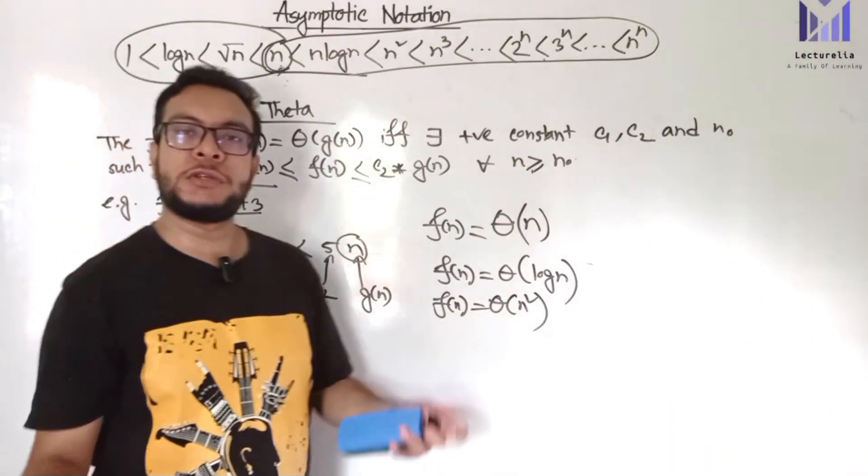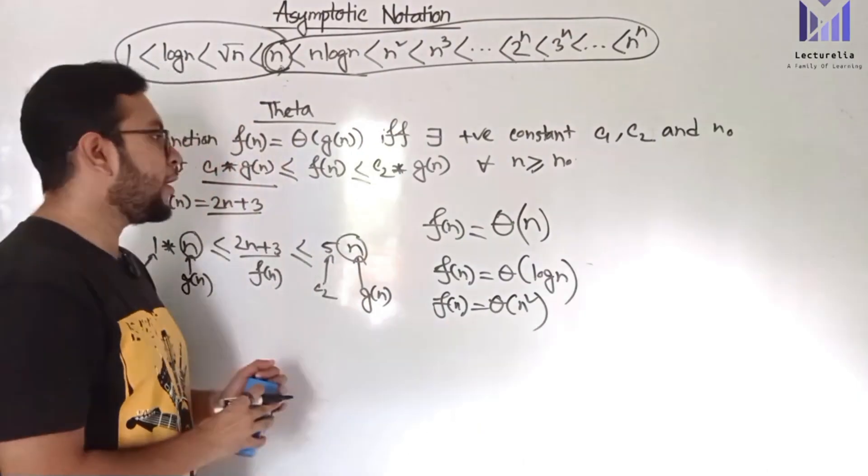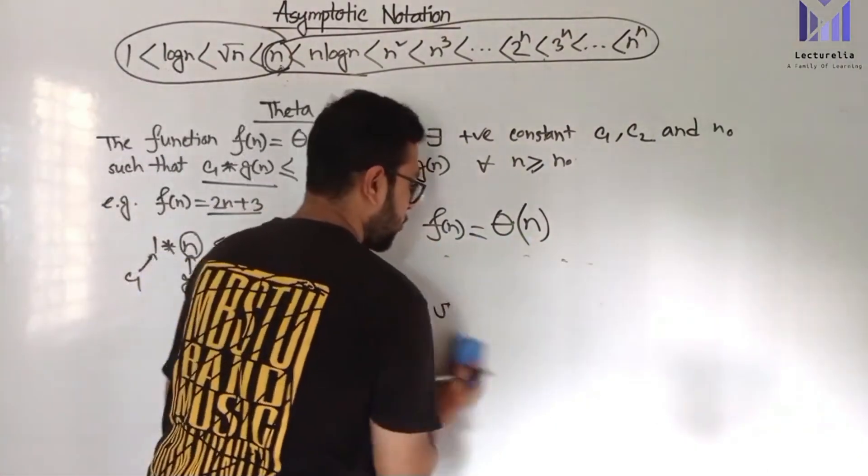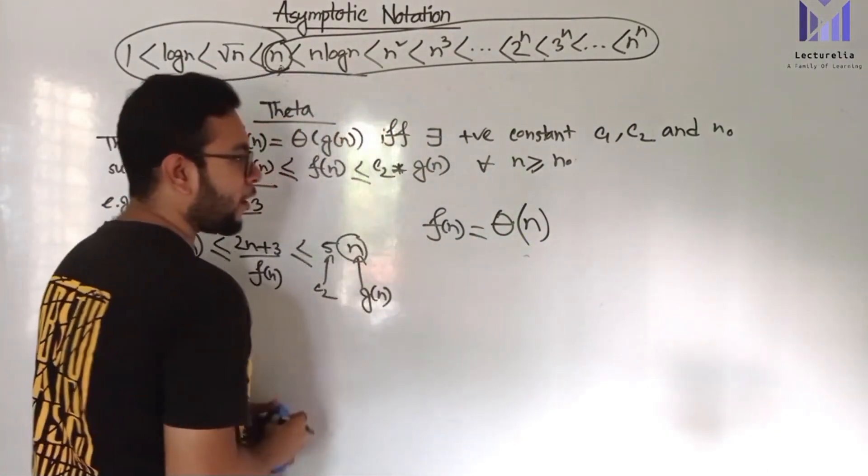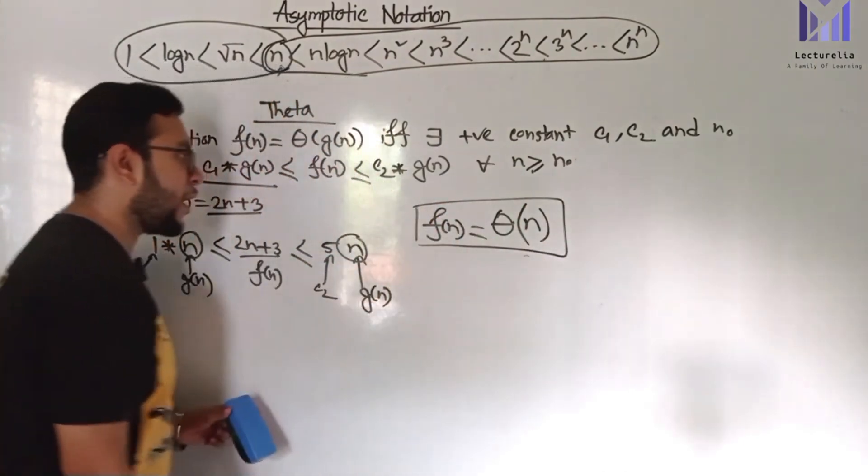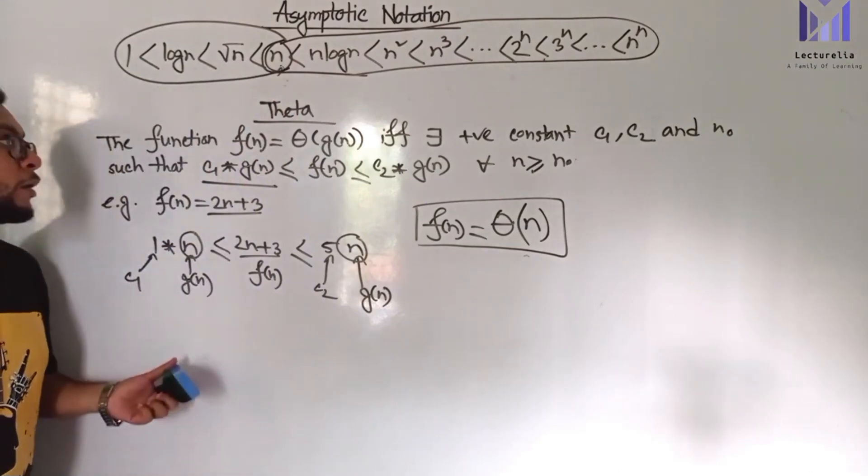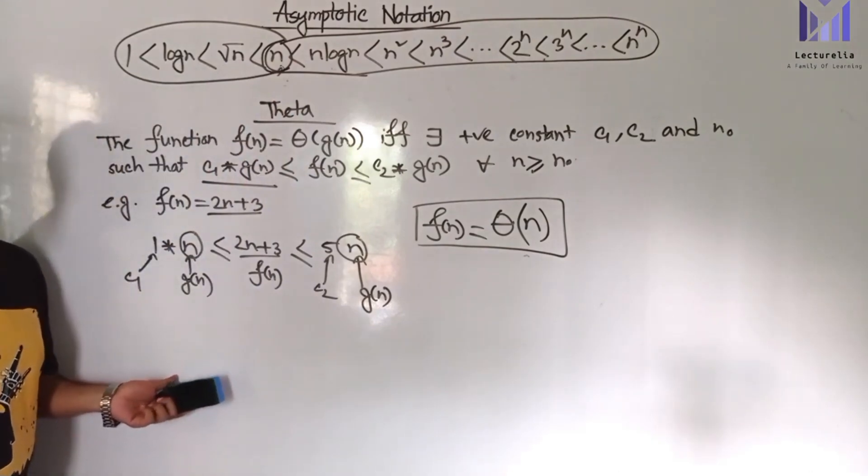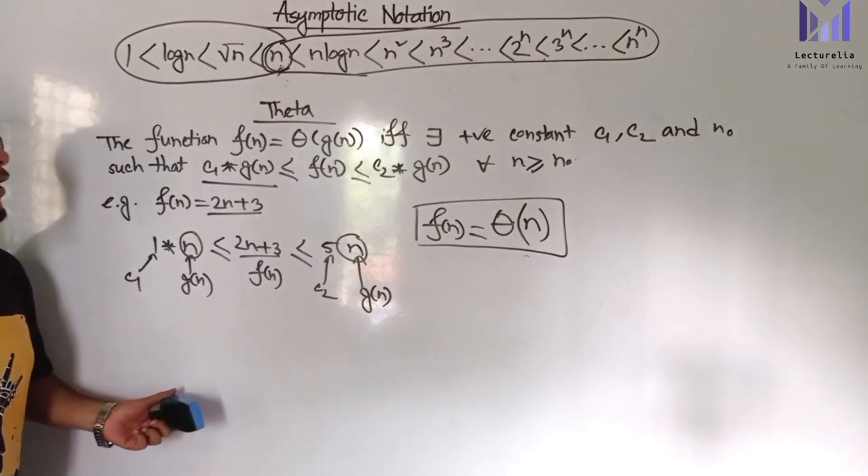This is a tight bound. It means we have the exact value. How do we represent the exact value? Theta of n. We represent the average bound and the tight bound. We need to use this one, which has the order of n.